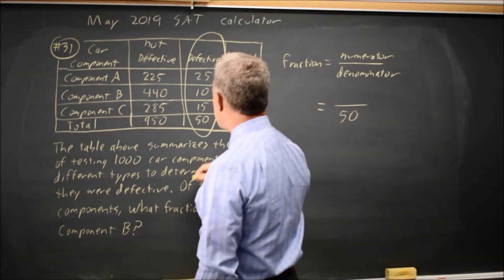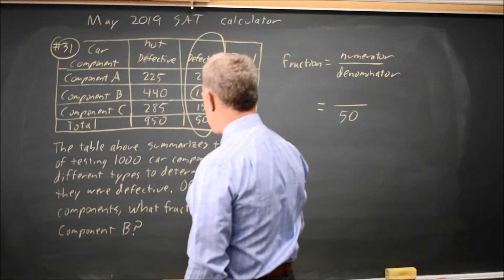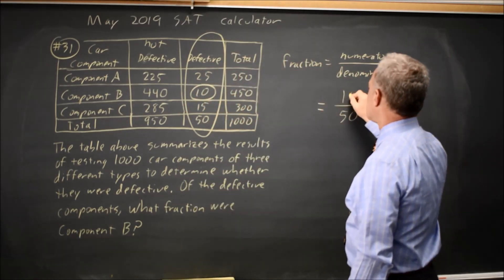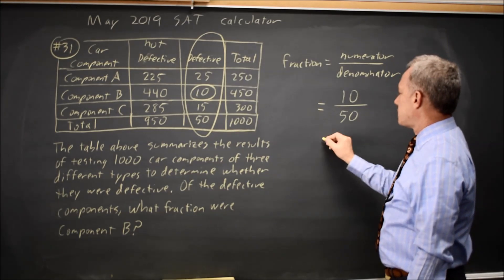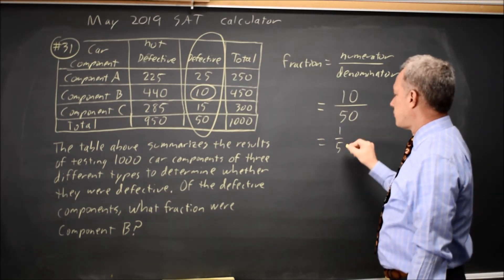So that's of those that are defective, which ones are component B, and that would be 10. So our fraction is 10 over 50, which is 1 over 5, or 0.2.